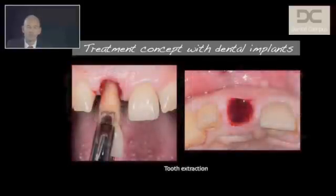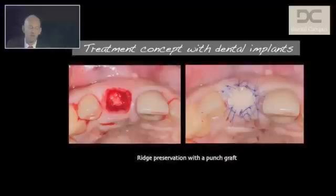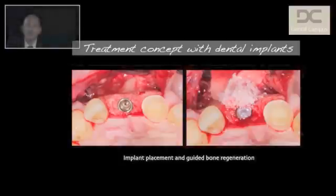It all started with the extraction. On the right hand side you can see the extraction socket. Then you can see that we used some xenogenic bone substitute material and placed on top a free gingival graft. Following a healing period of six weeks, the dental implants could be placed — there was the need for some further bone augmentation.